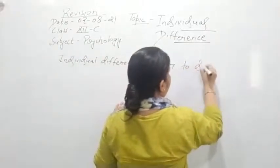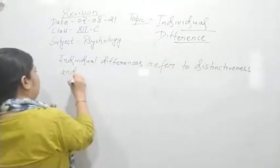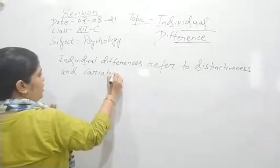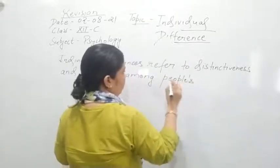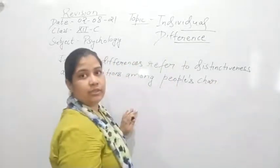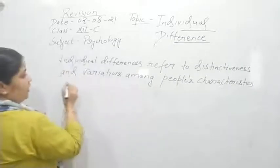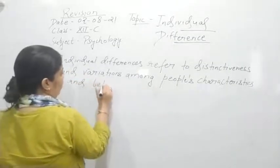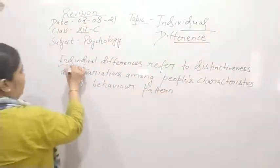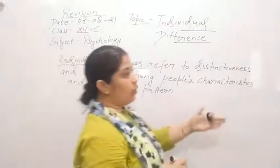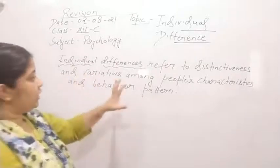Individual differences refers to distinctiveness and variations among people's characteristics and behaviour pattern. This is the meaning of individual differences. If it is asked as true or false, your answer will be true. Individual differences means there is distinctiveness or variations among individuals.